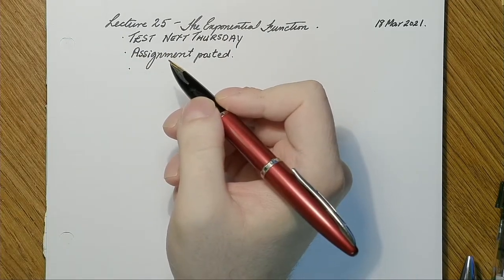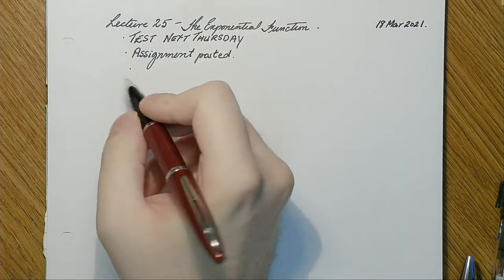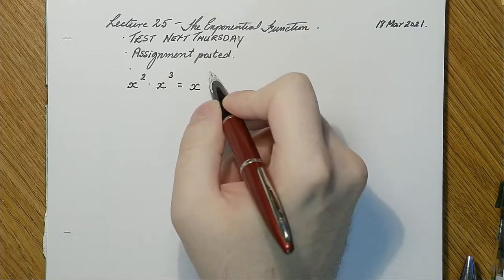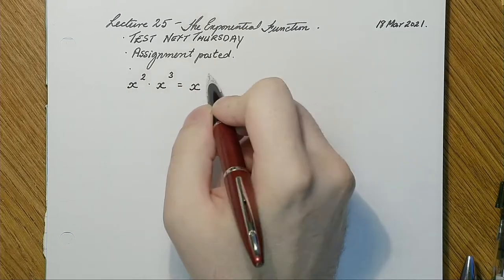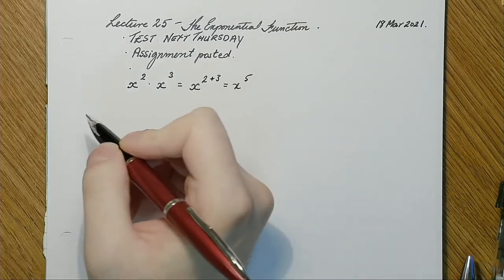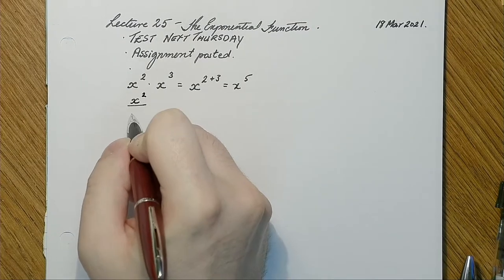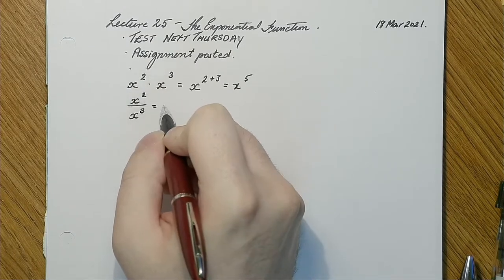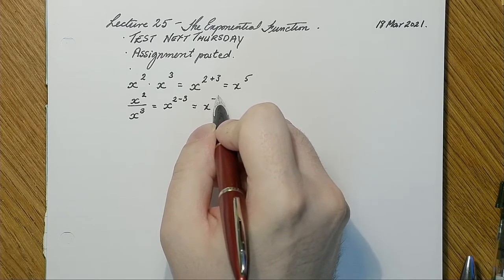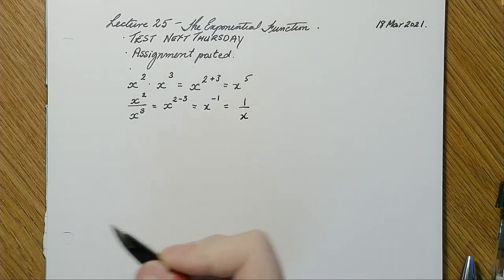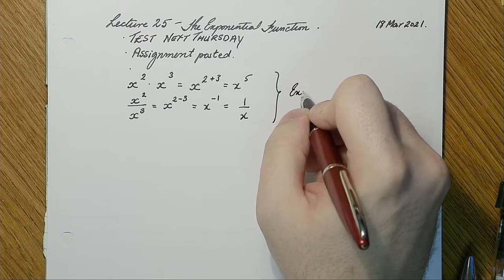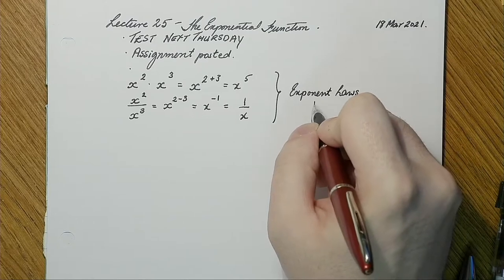At the beginning of this course we reviewed the exponent laws. We had laws like x squared times x cubed equals x to the fifth — when multiplying, you add the exponents, 2 plus 3. And x squared over x cubed equals x to the negative one, or 1 over x — for division you subtract the exponents. If you forgot these exponential rules, you can always go back and review them.